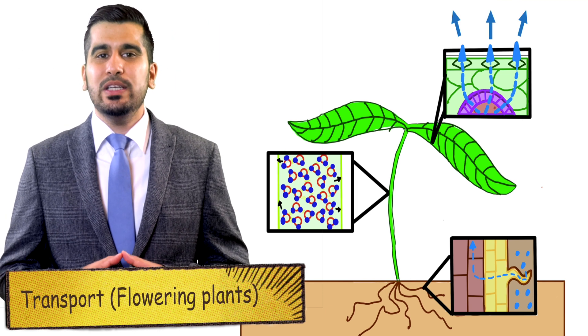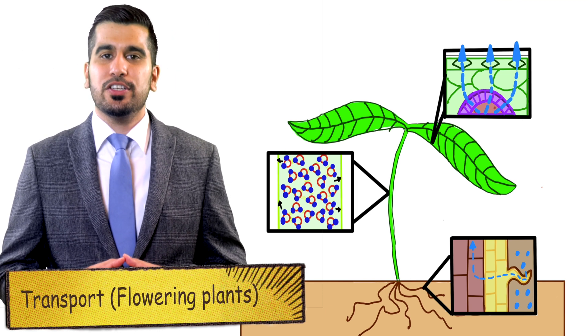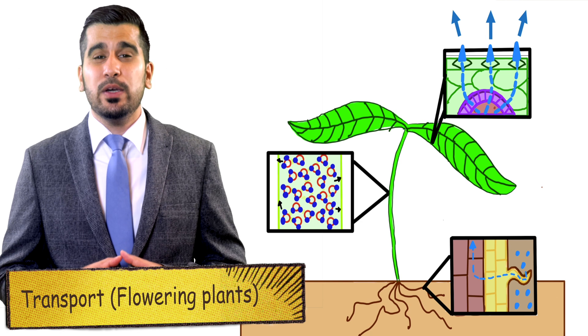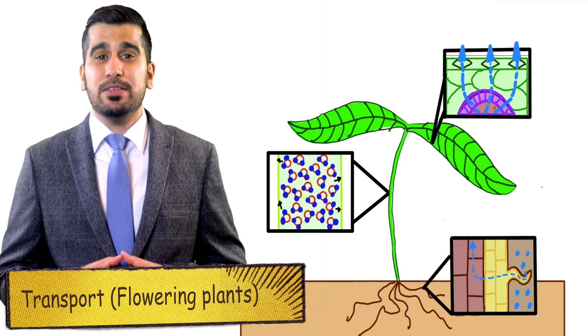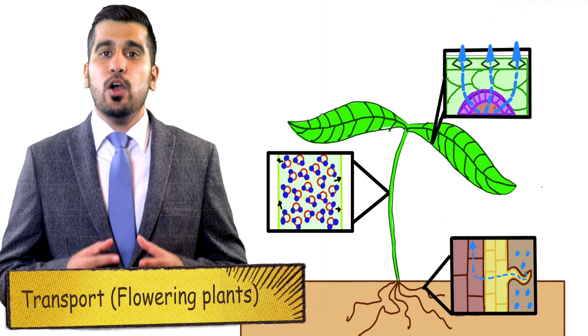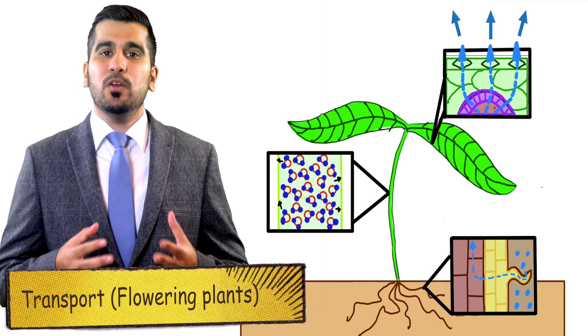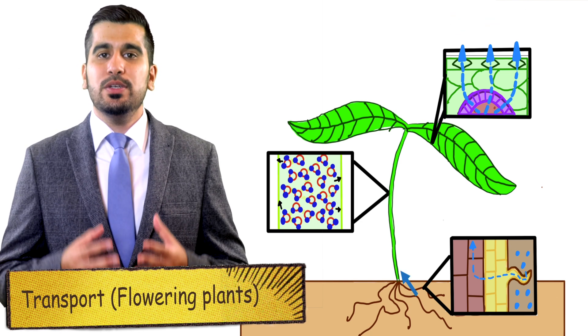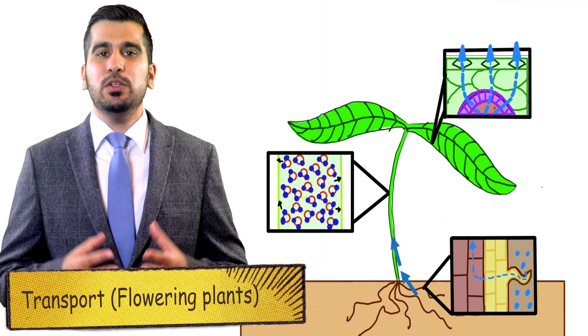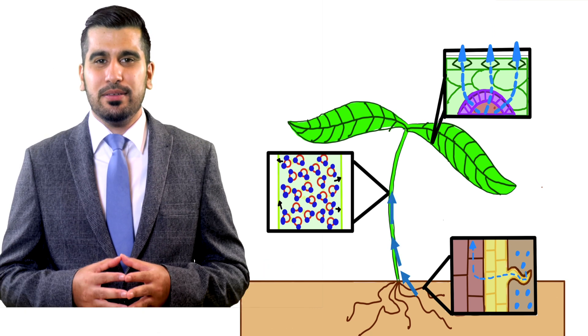In our last lesson, we looked at the structure of the thorax and how the alveoli are adapted for gas exchange. In this lesson, we'll be looking at the role of plant tissue in transporting water and nutrients in the plant.